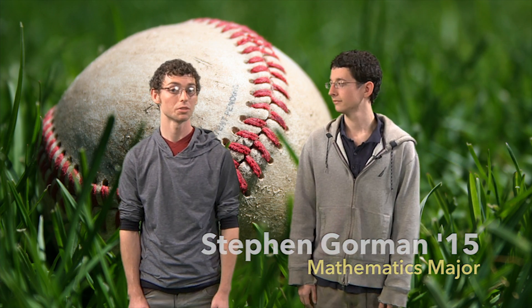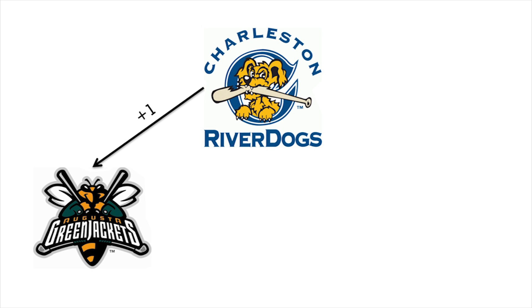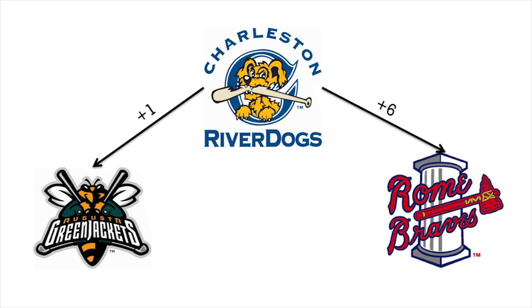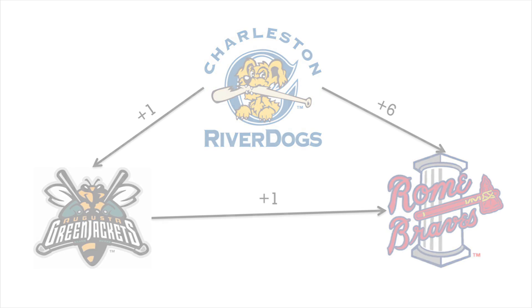Here's an example where the Riverdogs beat the Green Jackets by one point, and the Braves by six points. Who do you think would win between the Green Jackets and the Braves? If you guessed the Green Jackets, you were right — they beat the Braves by one point.